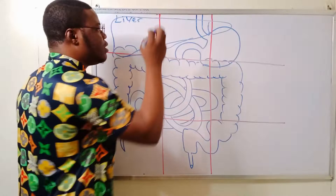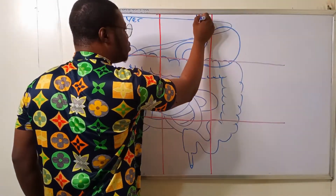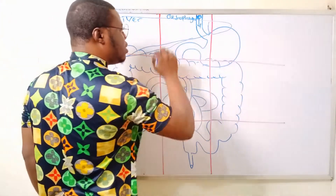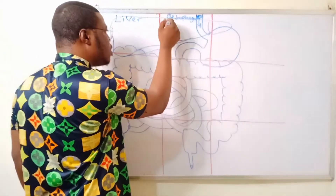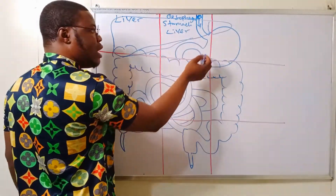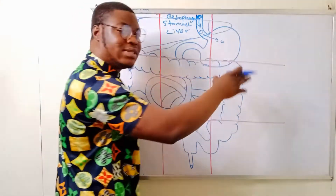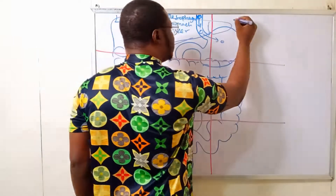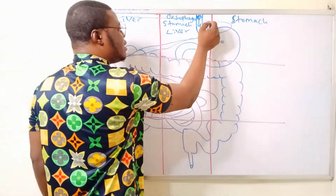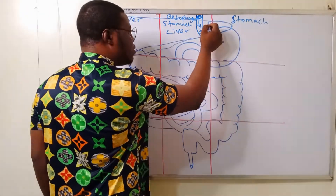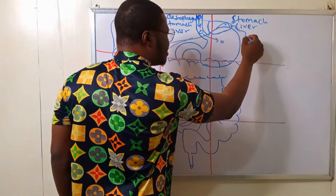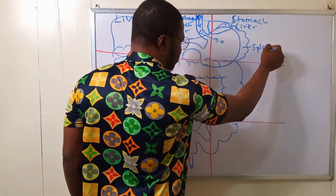In the epigastric region, we have the esophagus — where food passes through — as well as part of the stomach and an extension of the liver. The food then passes into the stomach, which also extends into the left hypochondriac region. Behind the stomach in the left hypochondriac region, you also have the spleen.